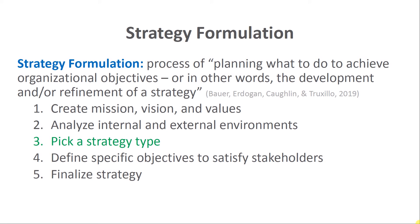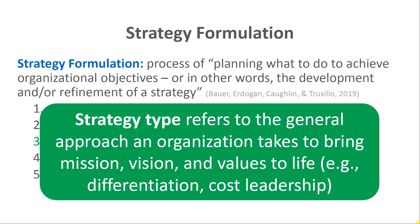When it comes to picking a strategy type, strategy type really refers to the general approach an organization takes to bring the mission, vision, and values to life — such as an organization picking a strategy type like differentiation or cost leadership. With differentiation, for example, an organization might decide to figure out how to make its products or services different from its competitors, which can ultimately help create and sustain a competitive advantage.